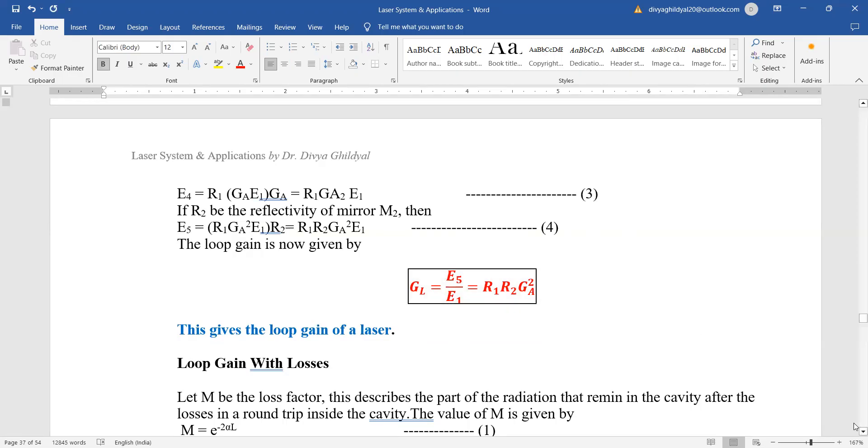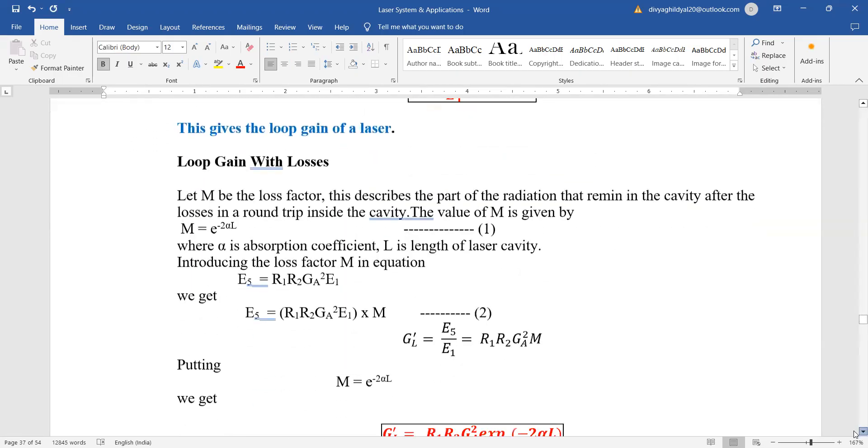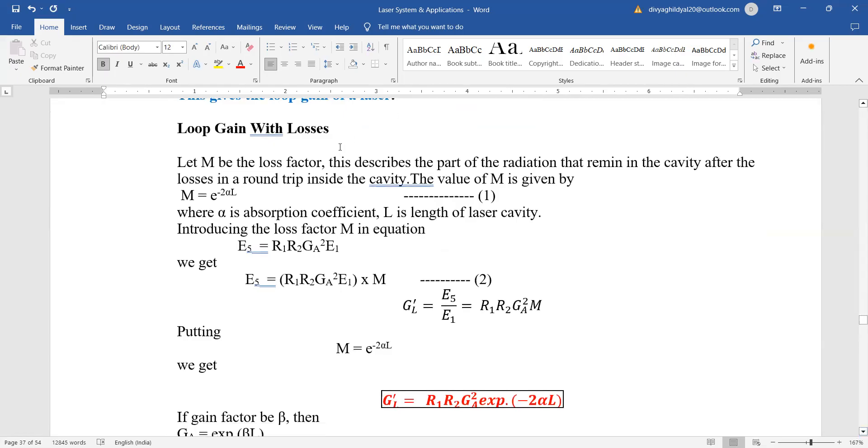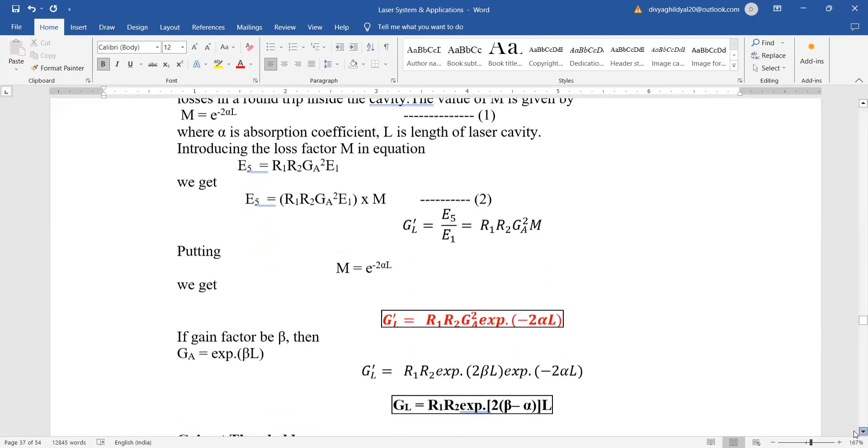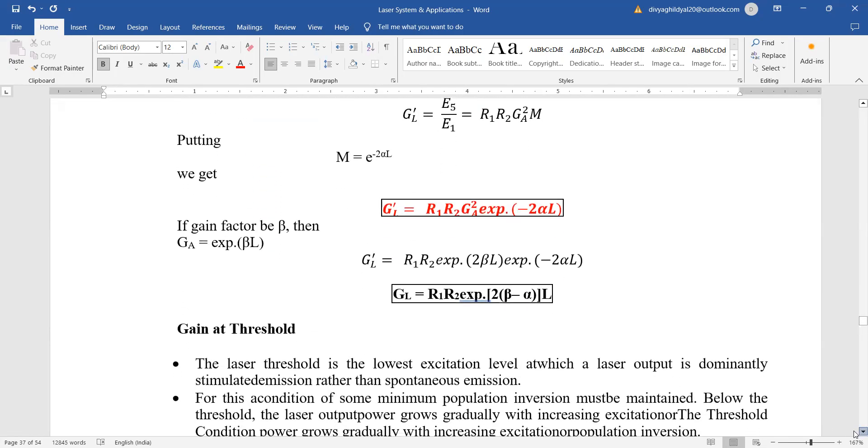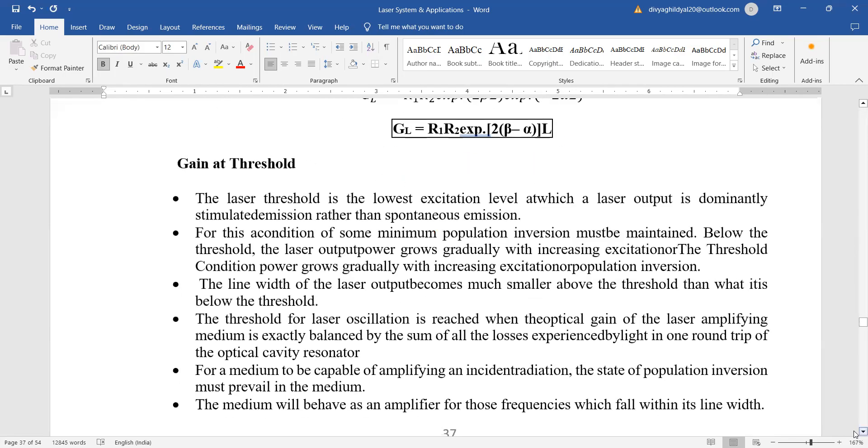Loop gain with losses. For that you just add a factor that is a constant. Let M be the loss factor. This describes the part of radiation that remains in the cavity after the losses in a round trip inside the cavity. Value of M is given by M equals e to the power minus 2αL where α is absorption coefficient and L is length of laser cavity. Put these values and you get the expression for loop gain as GL equals R1 R2 exponential to the power 2(β - α)L.